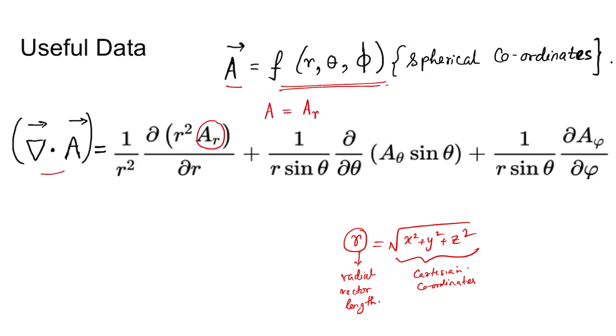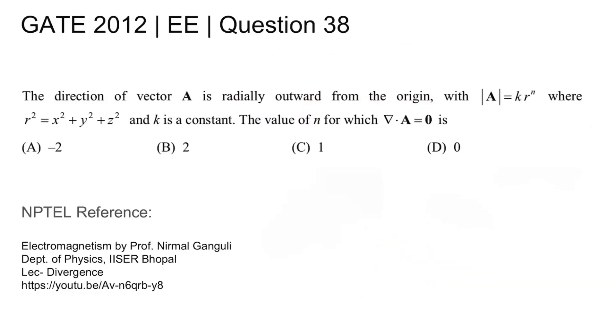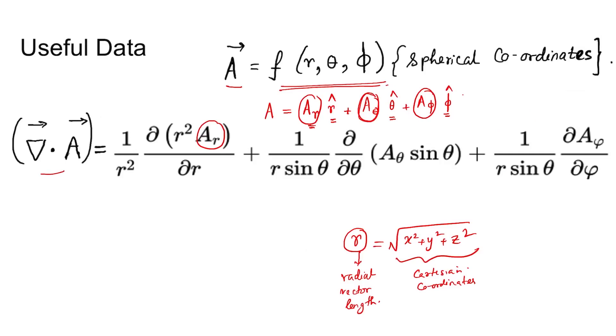A equals A_r r cap plus A_theta theta cap plus A_phi phi cap in spherical coordinates with radial, theta, and phi components. You need to do the operation and get the divergence. In this problem, A is only a function of r, so its derivative with respect to theta and phi will be 0.